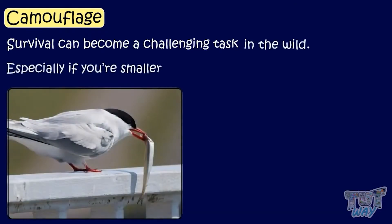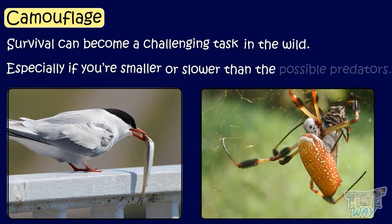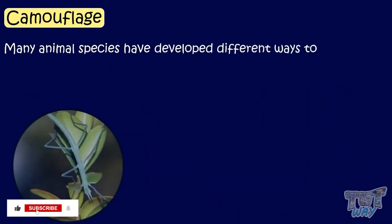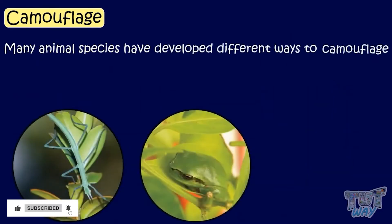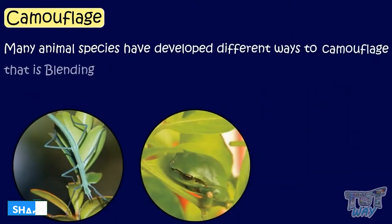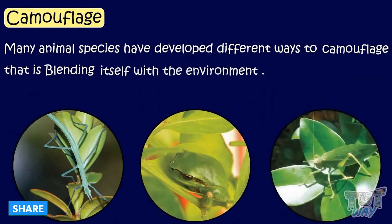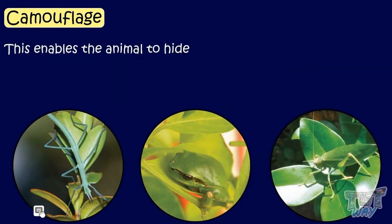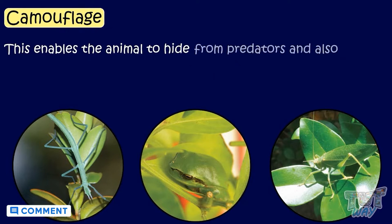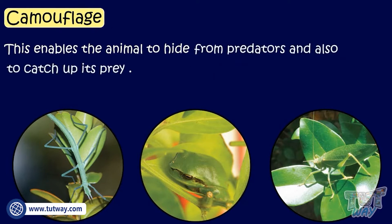Camouflage. Survival can become a challenging task in the wild, especially if you're smaller or slower than the possible predators. This is why many animal species have developed different ways to camouflage, that is, blending itself with the environment. This enables the animal to hide from predators and also to catch its prey. Let's have a look at some examples.